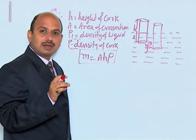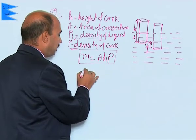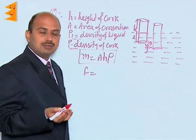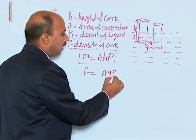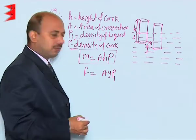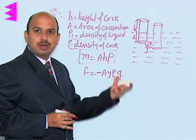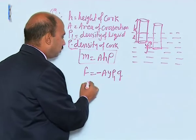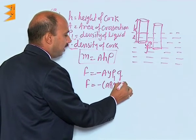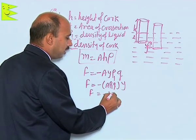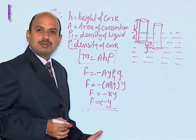This upward thrust is trying to bring the cylinder back to its equilibrium position. That force — the upthrust — equals the weight of the liquid displaced. We can write: area of cross-section times y (the displacement) times density of the liquid rho1 times g — that gives the weight. We write a negative sign because it is acting upward as a restoring force. So, F = −Aρ₁gy, which means F = −ky, where F is directly proportional to −y.